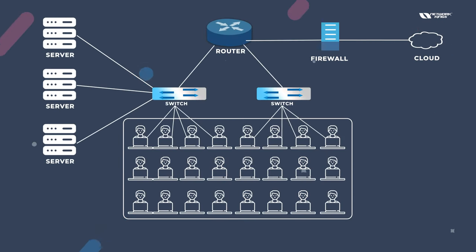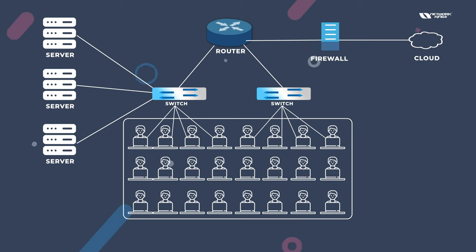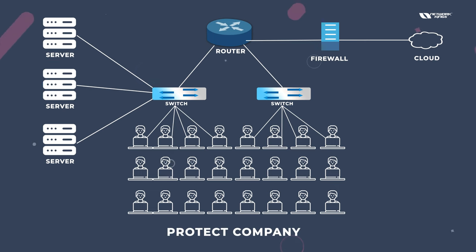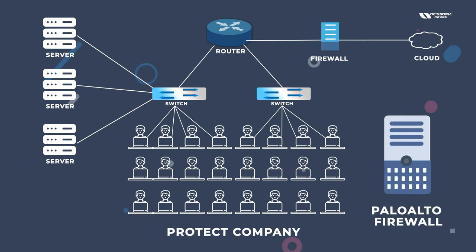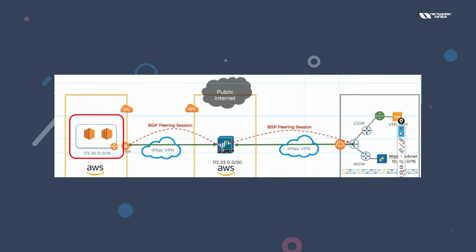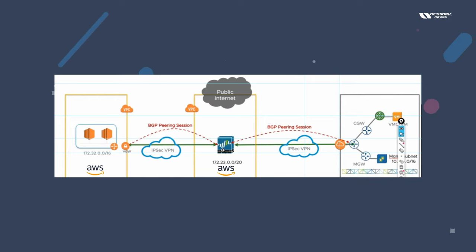Many big companies said work from home, but now they are asking employees to come back to the office. There will still be a bright future for network engineers. Even in cloud, you can deploy Palo Alto firewall — firewalls are used inside cloud as well. If you have good networking and cloud knowledge, you can connect your office to AWS through a Palo Alto firewall.